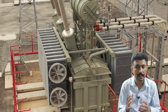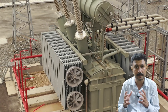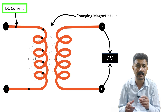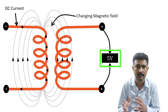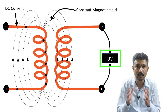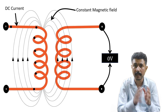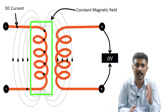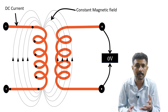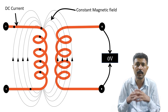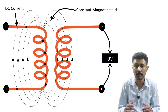When we give DC supply to the transformer, we can observe the following: after starting the DC supply, there is some deflection on the voltmeter on the secondary side, and then that meter goes to zero. So no voltage is shown on the secondary side, while on the primary side a current is still flowing through the primary winding. After some time, the winding heats up and the primary winding will burn.